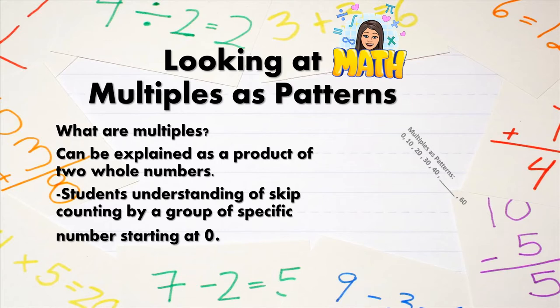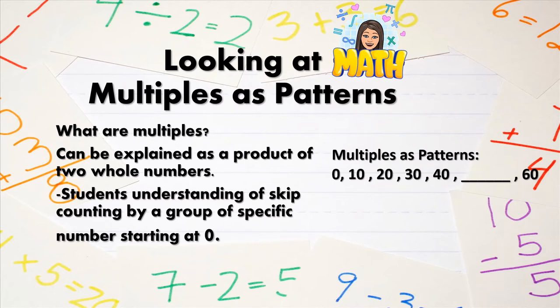So for example, here are the multiples of 10. We have 0, 10, 20, 30, 40, blank, 60. But what we notice here is that for every group, we're adding 10 more from one group to the next group. So what does that mean? So starting at zero, we have 0 groups of 10. No groups of 10 have been added.